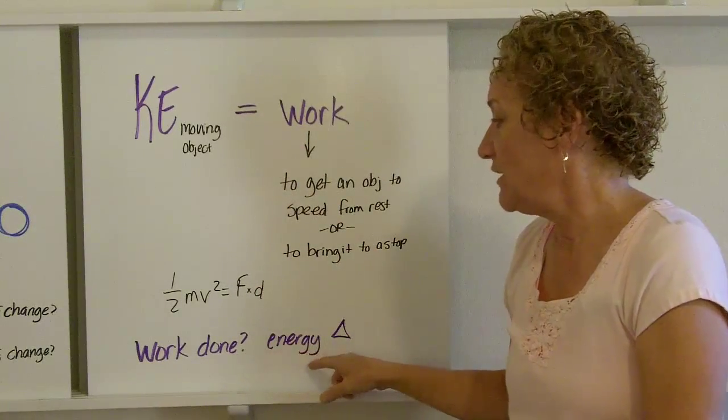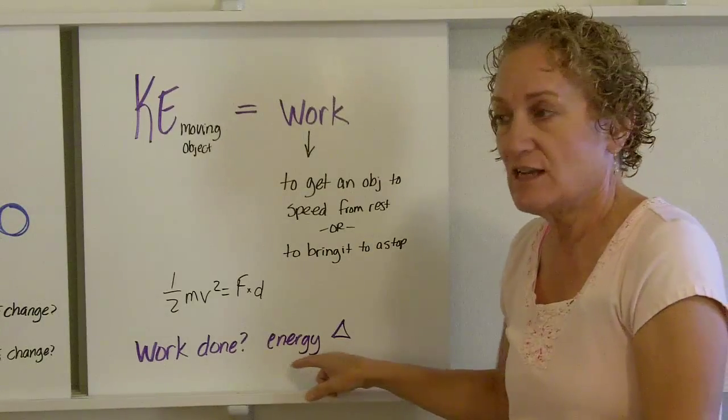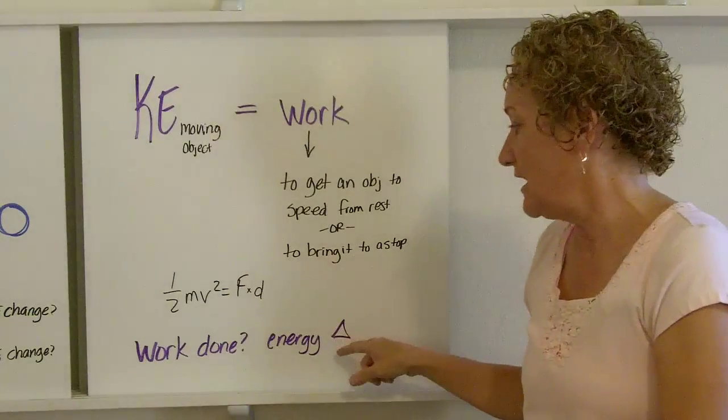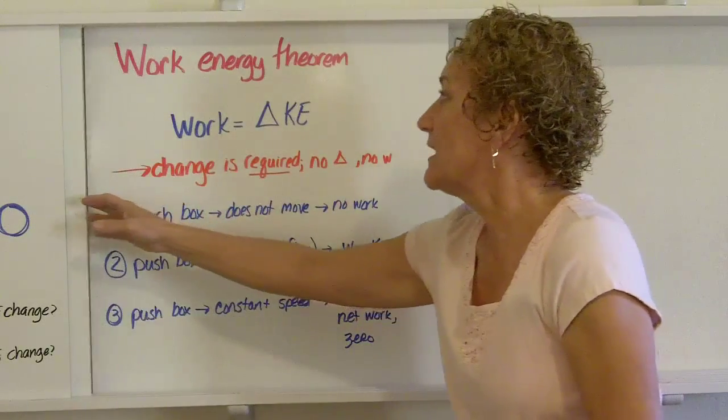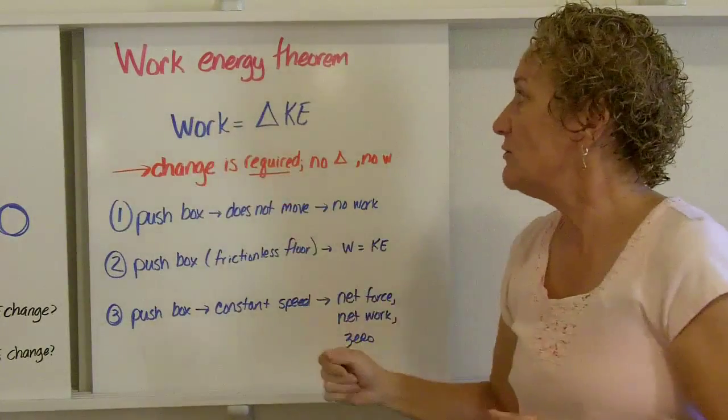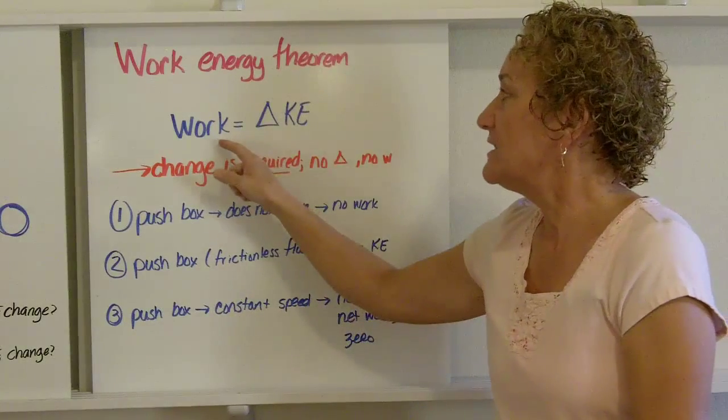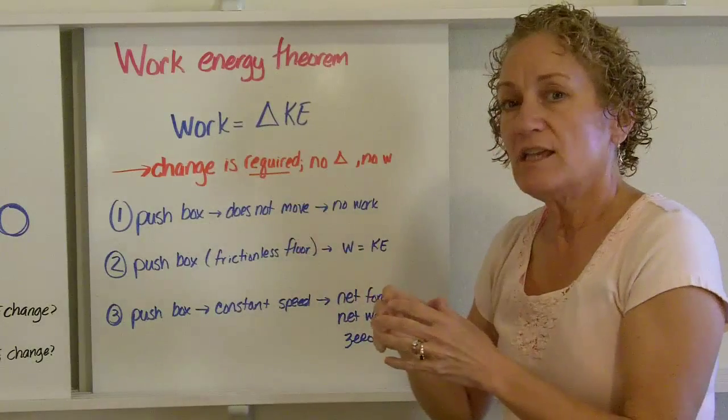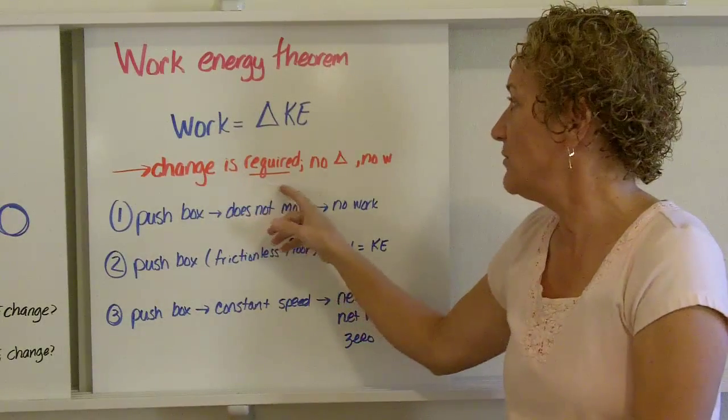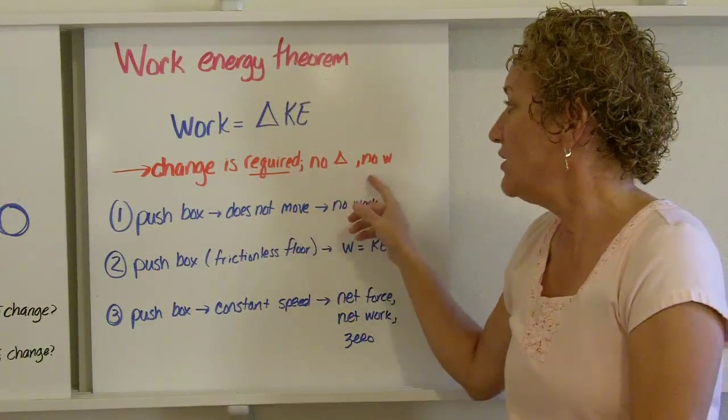If work is done, there is an energy change. If there is an energy change, work is done. There has to be an energy change in order for work to be done, which leads us right into the work-energy theorem. It says that work is equal to the change in kinetic energy. Change is required. No change, no work.